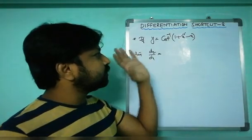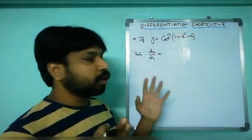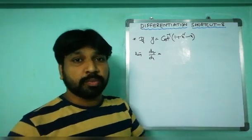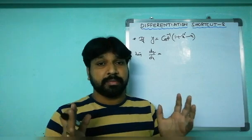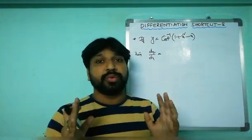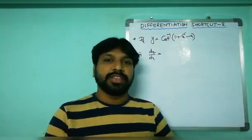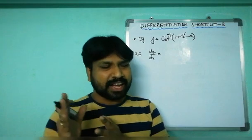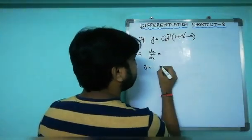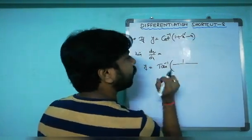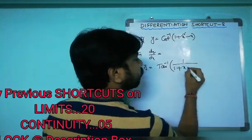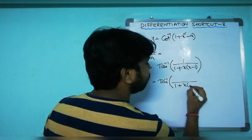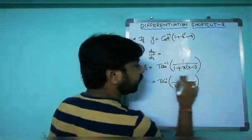Next question: if y equals cot⁻¹(√(1 plus x²) minus x), find dy/dx. Before applying the shortcut, simplify. Whenever the question involves cot instead of tan, convert it using cot⁻¹(θ) equals tan⁻¹(1/θ). So y equals tan⁻¹(1/(√(1 plus x²) minus x)). Taking x as common from the denominator: x(√(1/x² plus 1) minus 1), and adjusting the numerator.